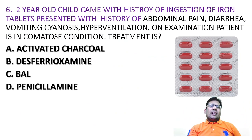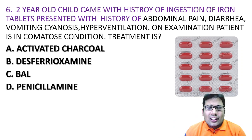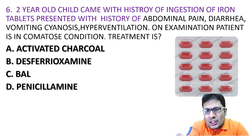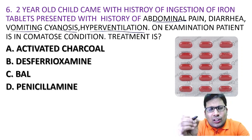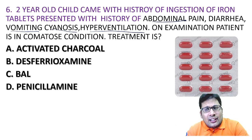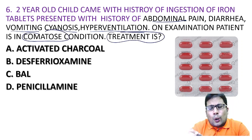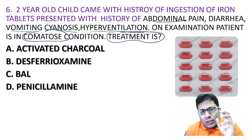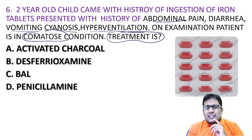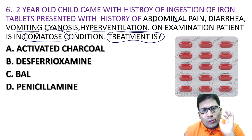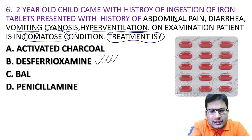A two-year-old child came with a history of ingestion of iron tablets — this is a case of iron poisoning. The patient had abdominal pain, diarrhoea, vomiting, cyanosis, and hyperventilation due to acidosis, and was in a comatose condition. The best treatment option from the choices — activated charcoal, desferoxamine, British anti-Lewisite (BAL), penicillamine — is desferoxamine. Whenever a question is asked about iron poison, your answer should be desferoxamine.